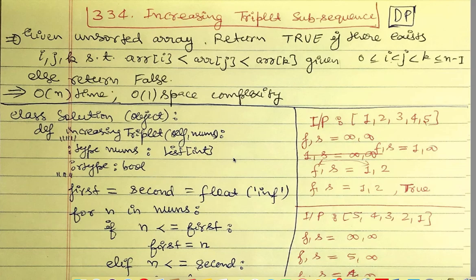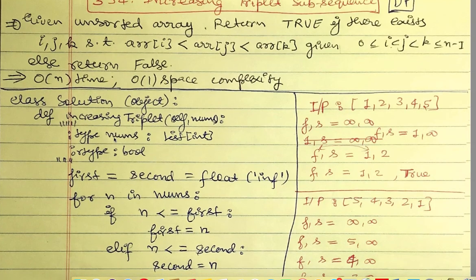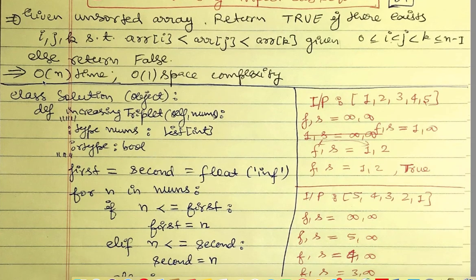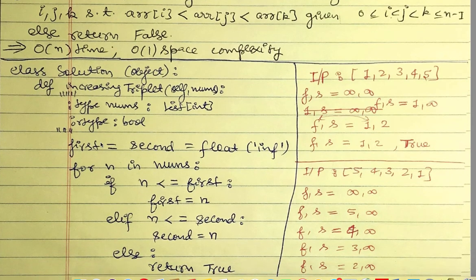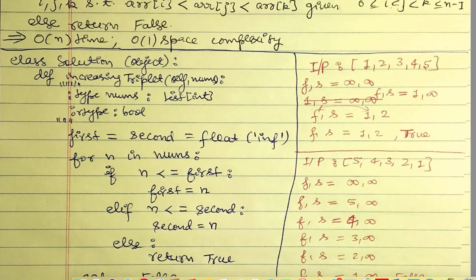For this question there are two constraints: O(n) time, meaning we can iterate through the array just one time, and O(1) space complexity, meaning we are not supposed to copy the array or allocate new space. The solution is a function called `increasingTriplet` that takes a list of integers and returns a boolean.